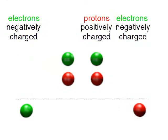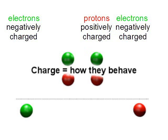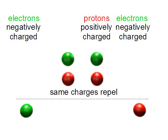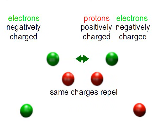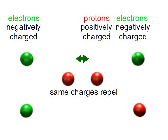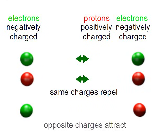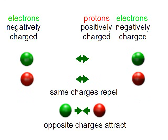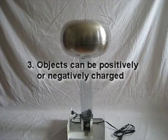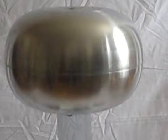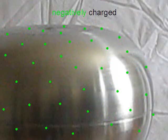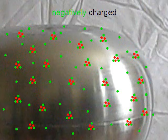What does charge mean? Charge is simply a way of saying how the electrons and protons will behave. Things that have the same charge will repel each other, so two negatively charged electrons will repel each other, as will two positively charged protons. And things that have opposite charges will attract each other, so a negatively charged electron will attract a positively charged proton.